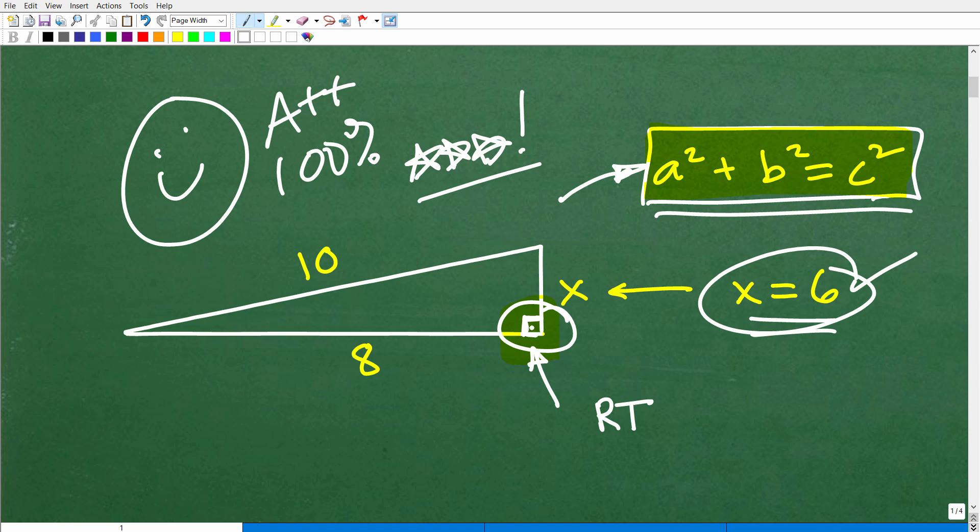Anytime you see a triangle and it has a little square, little box in that corner like that, that indicates that this is a right triangle, meaning that this angle is 90 degrees. So anytime you have a right triangle, you can use this formula.